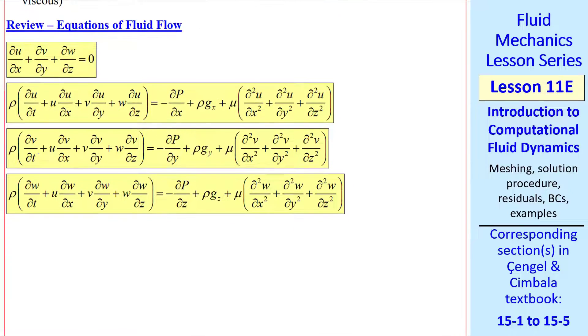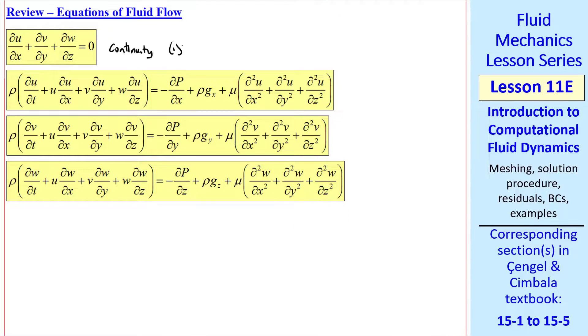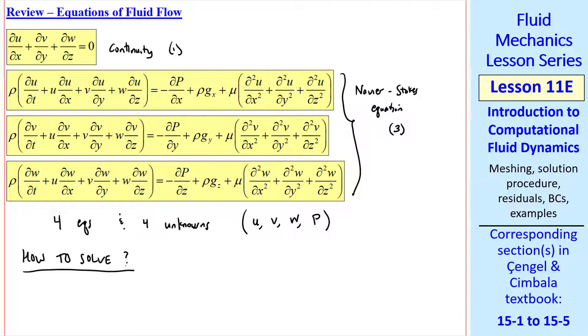As a quick introduction, let's review the equations of fluid flow. We have one scalar equation for continuity and three components of the Navier-Stokes equation. For 3D flow, this represents three more equations. So we have four equations and four unknowns: the three velocity components and pressure. If this were compressible, we'd also have to solve for density.